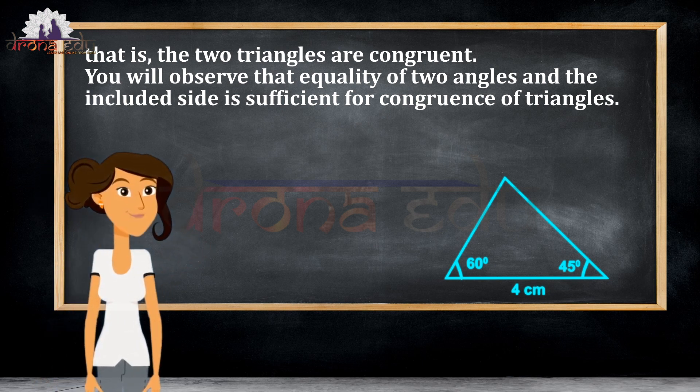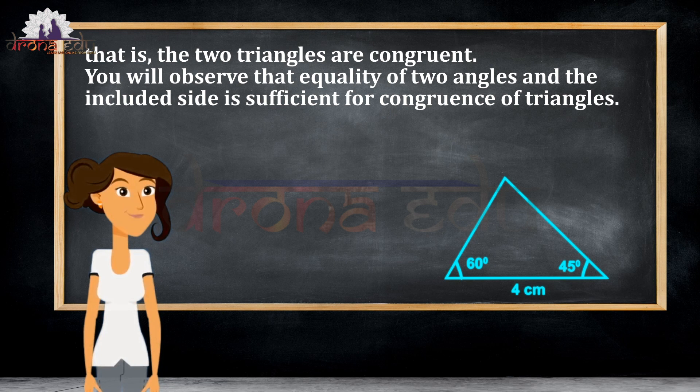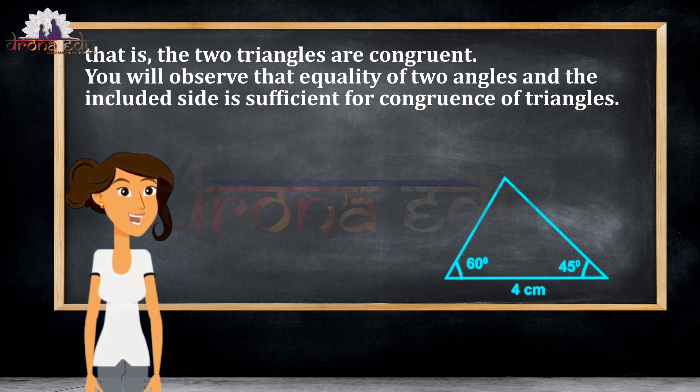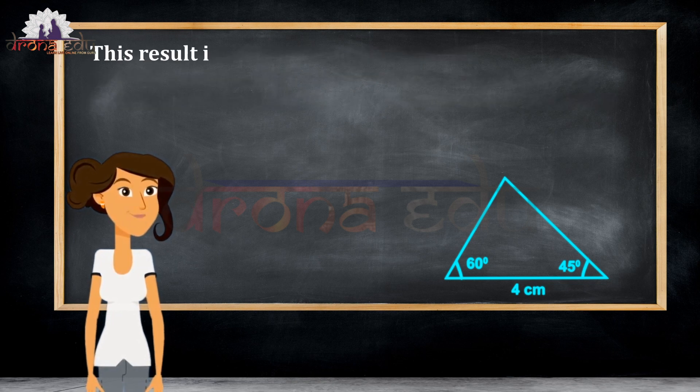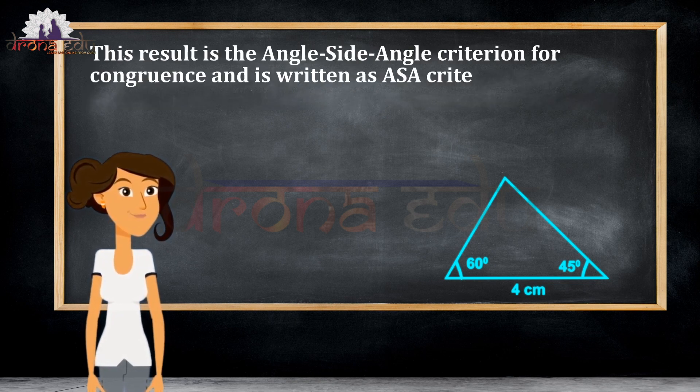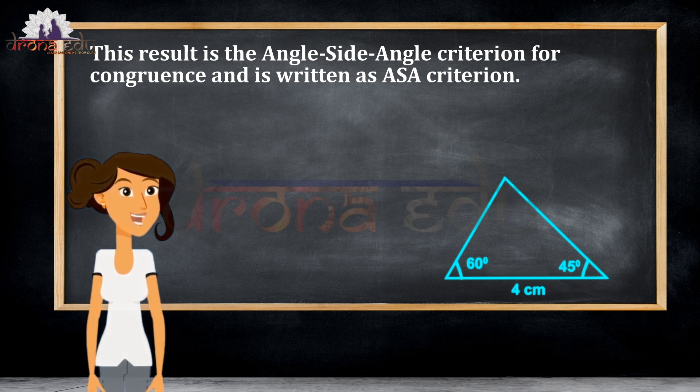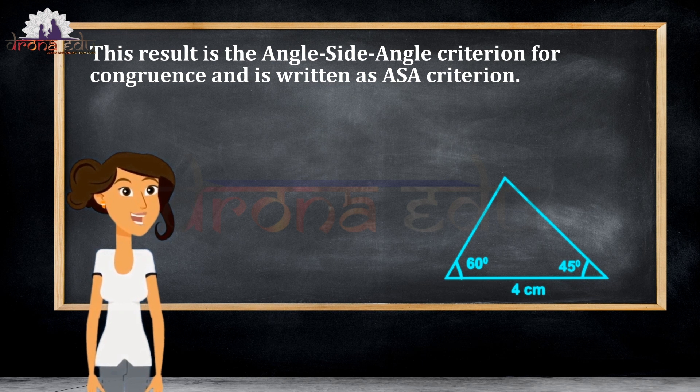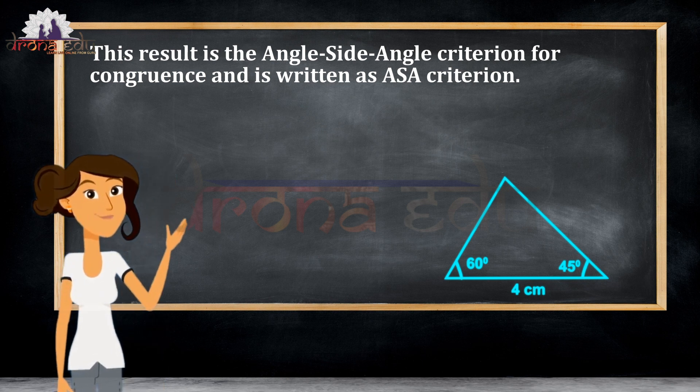You observe that the equality of two angles and the included side is sufficient for the congruence of a triangle. This result is called the Angle-Side-Angle criteria of congruence. It is written as ASA criteria.